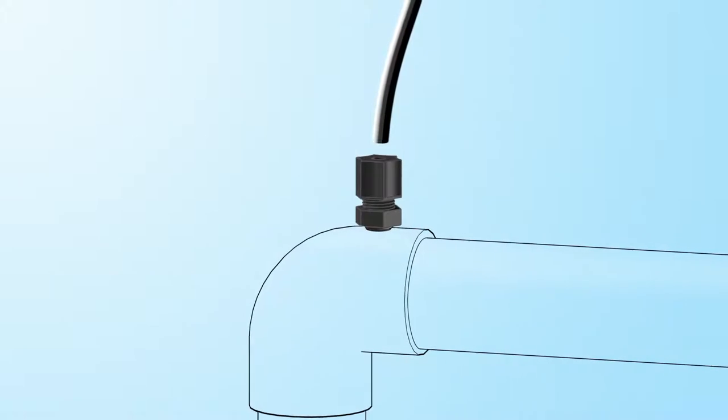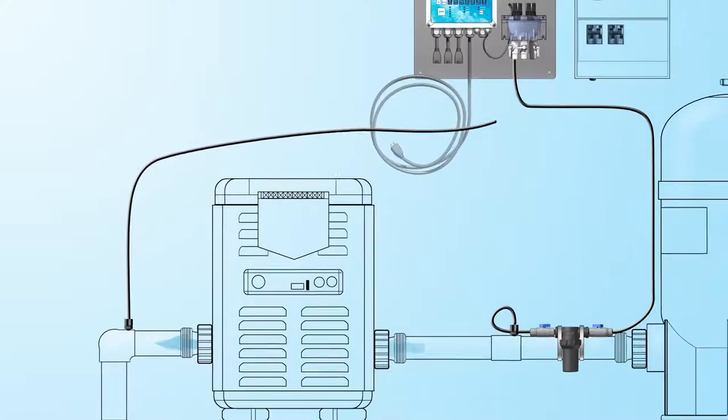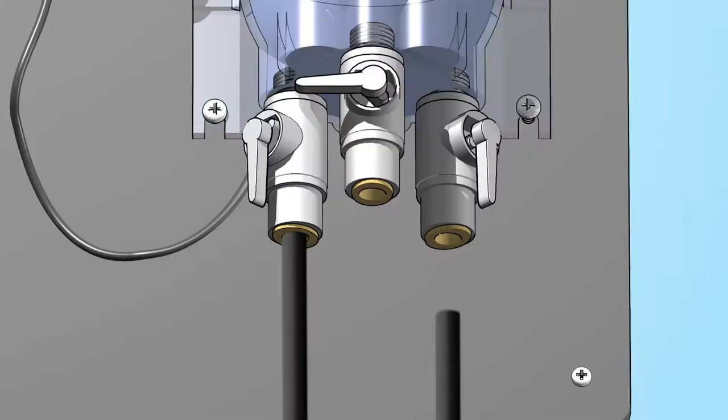Insert one end of the tubing into the fitting and hand tighten. Insert the other end of the tubing into the right valve of the flow cell.